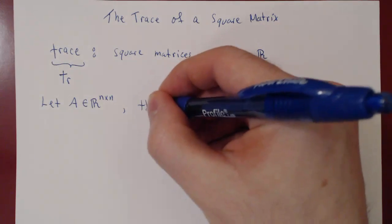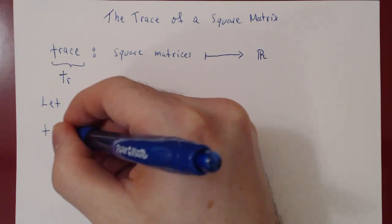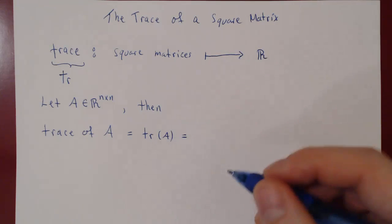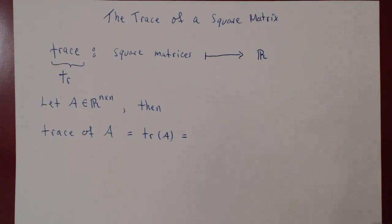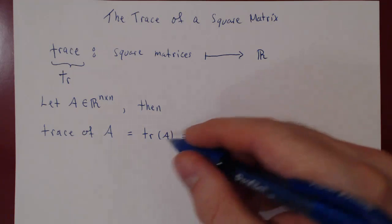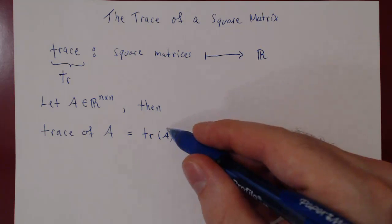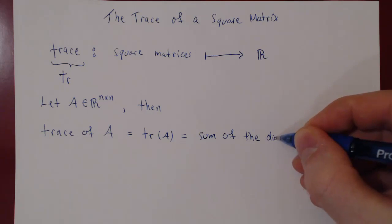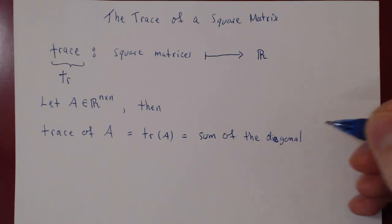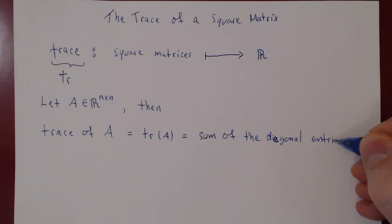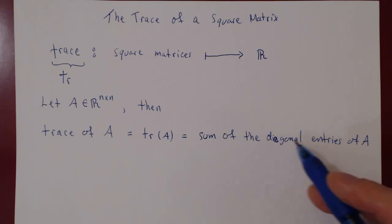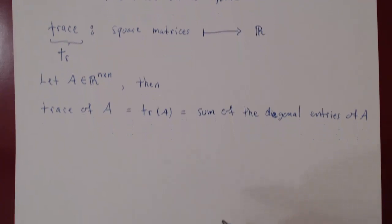Then we have the trace of A. We write trace of A, or more shortly TR(A), equals the sum of the diagonal entries of A. That's the trace — you add the entries on the main diagonal of A. That's how you should think of the trace numerically.